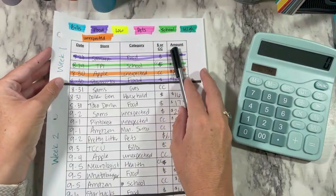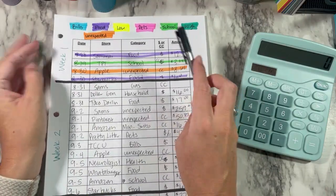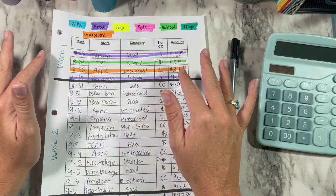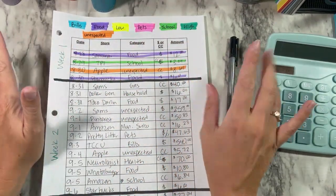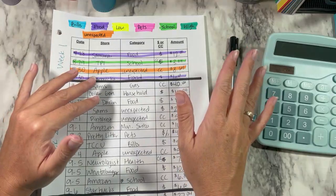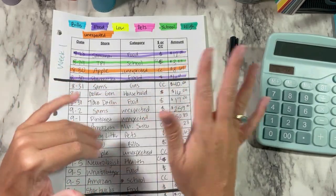So today we're going to be reviewing my week two spending tracker to see how much I've spent, if I've stayed on budget. What I'm trying to do is color code everything the best as I can and keep track of how much I'm spending in each category. That way I can adjust my budget as needed in the future.